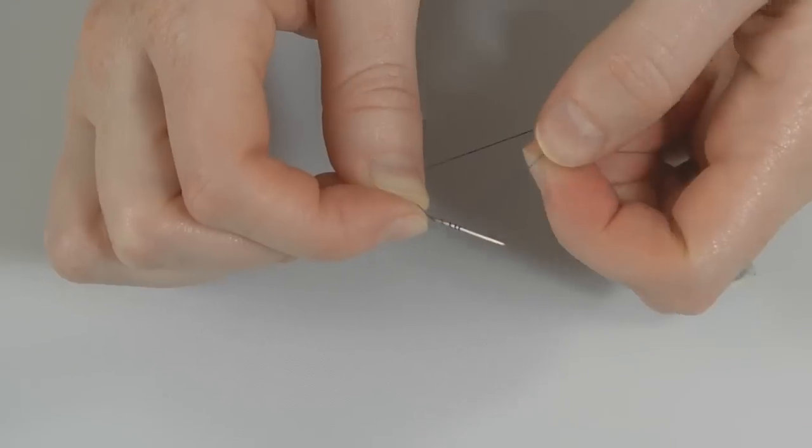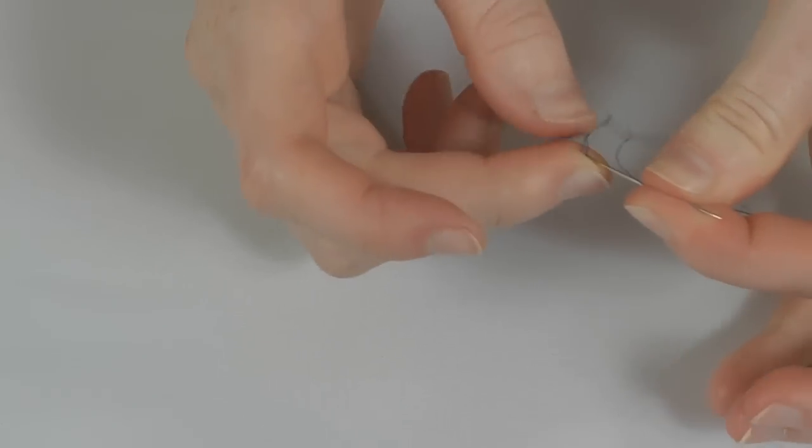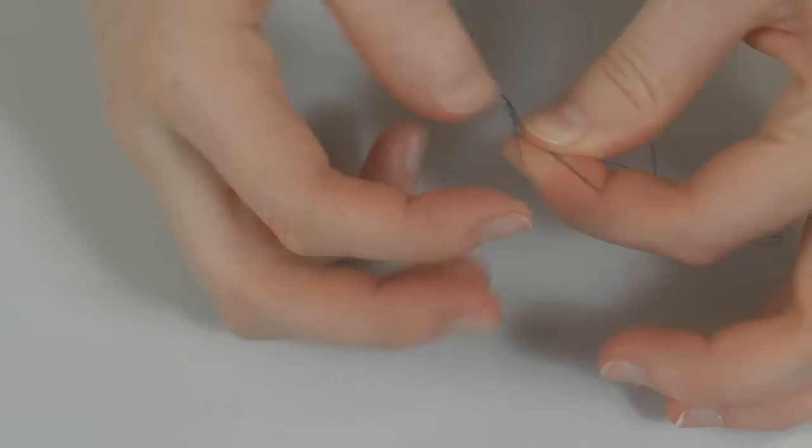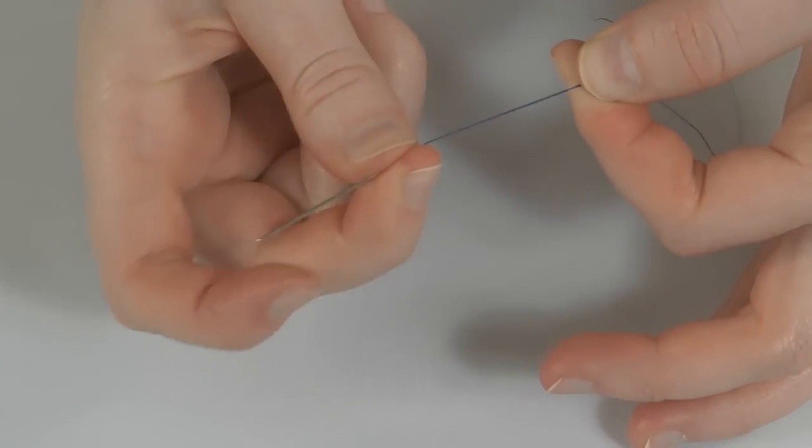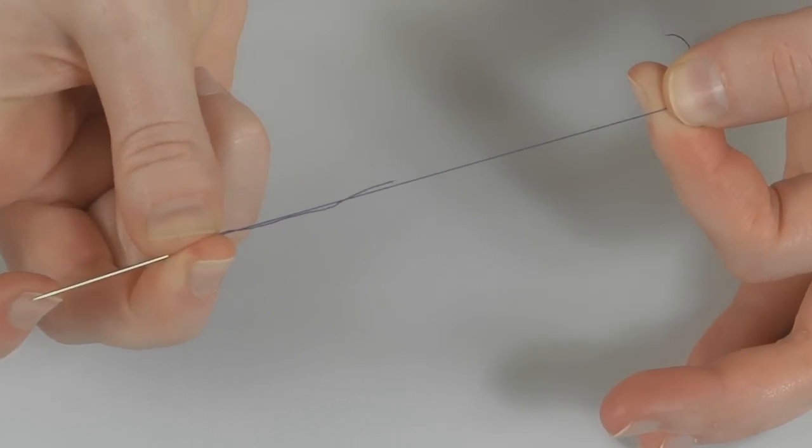Hold the wrapped thread with your thumb and forefinger and pull down to the end of the thread to create a quilter's knot.